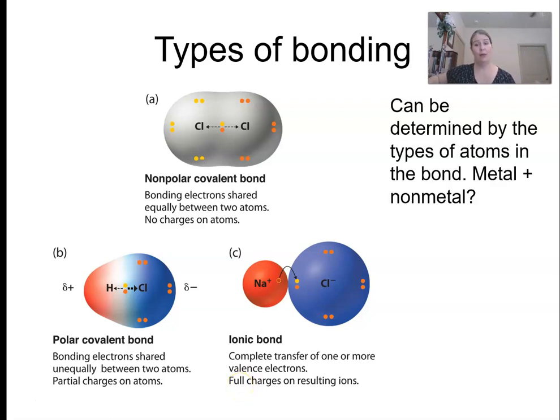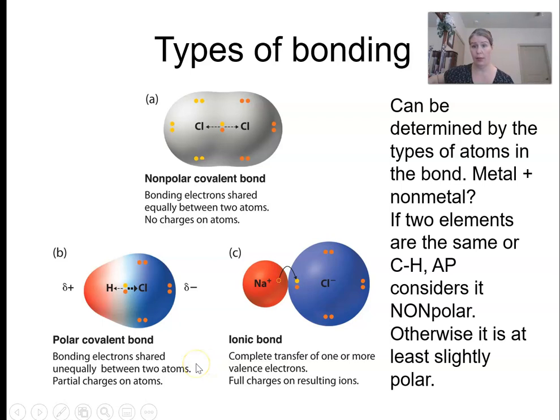In order to determine what type of bond I'm looking at, I have to look at the type of atoms in the bond. Ever since first year, we've said a metal and a nonmetal are going to give us an ionic bond. So if I have two nonmetals, then I'm looking at a covalent bond.